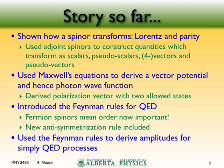Then we solved Maxwell's equations by introducing the four-potential A-mu, and came up with a photon wave function which has a polarization vector. We said this polarization vector has two allowed states, not 2s+1=3, because we have a massless photon so we can't have a transverse polarization — that only applies for massless spin-one particles. Next week when we do W and Z bosons you get three polarization states.